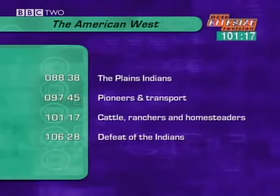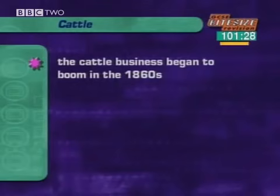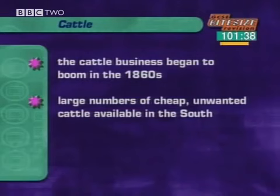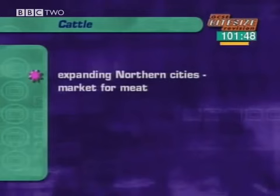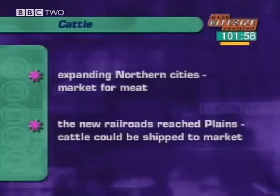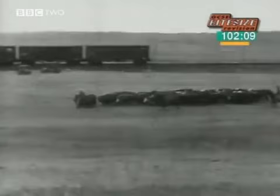Now we move on to cattle, ranchers, and homesteaders. After the American Civil War of 1860 to 65, three things came together to bring about a boom in the cattle business on the plains. During the war, cattle in the south were allowed to breed uncontrolled and there were millions of cheap, unwanted cattle. Texas Longhorns were a tough breed able to live on the poor grass of the plains. Farming in the north had been disrupted and the expanding cities needed meat. By the 1860s, the railroads had reached into the plains, providing a means of shipping meat to market.